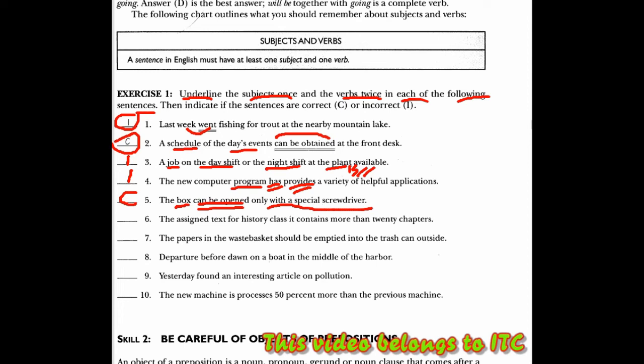Lalu pada bagian nomor 6, ini salah, incorrect lagi. Mengapa? Karena assigned text, itu adalah subjek, lalu ada it-nya lagi, ada subjek lagi. Jadi di sini, subjeknya double. Kalimat ini salah. Kata kerjanya, contains, sudah benar.